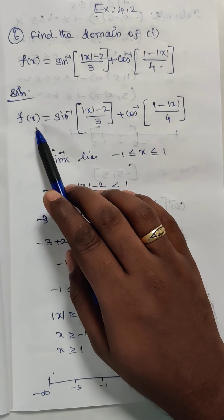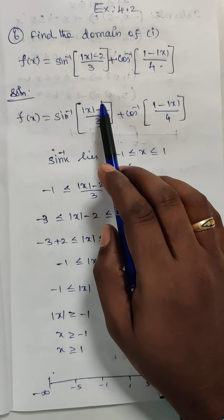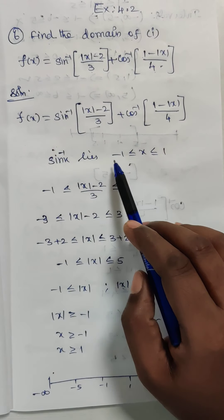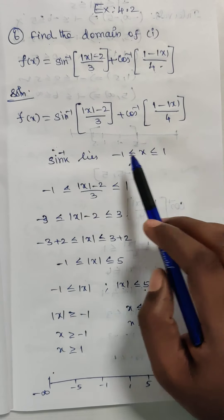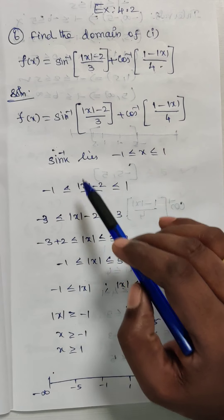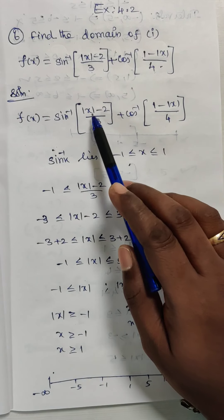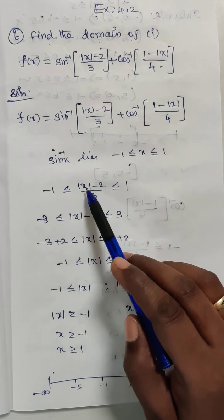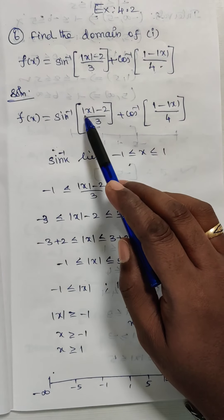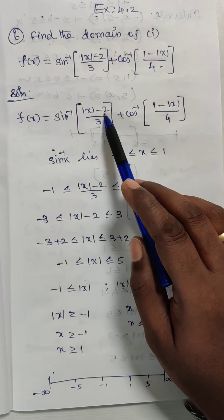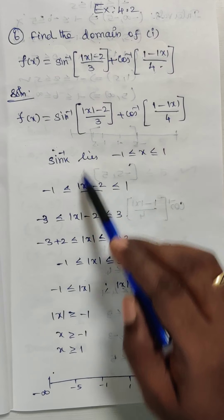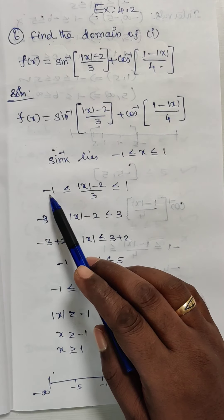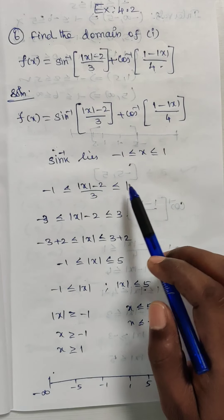So f of x equals — I am going to take the sin inverse range, which is minus 1 to plus 1. So the value of mod of x minus 2 divided by 3 lies between minus 1 and 1.